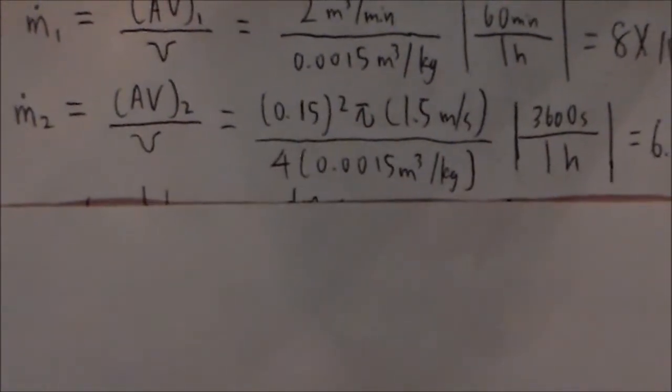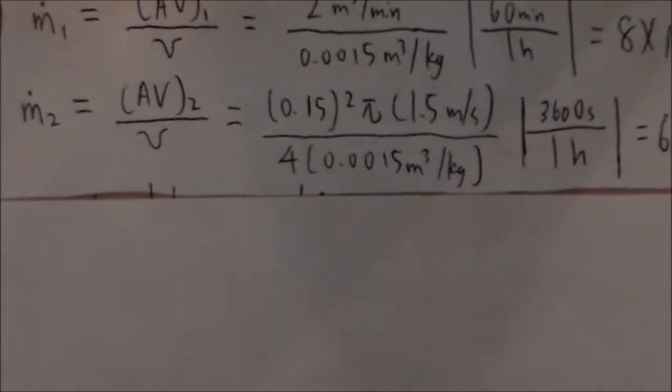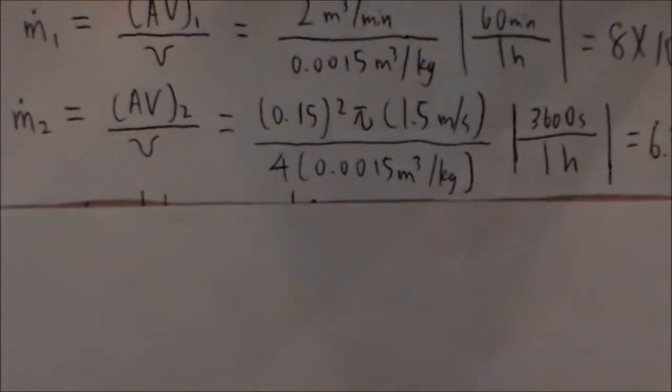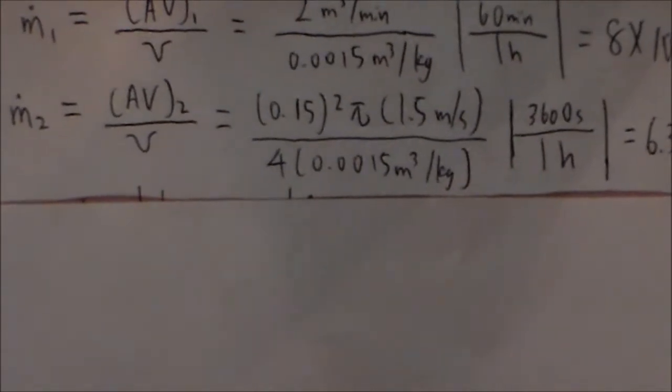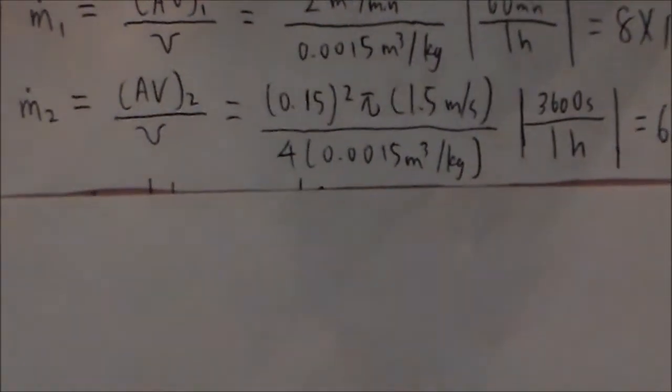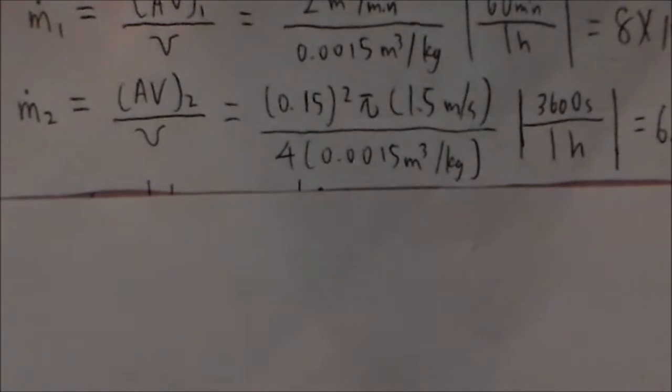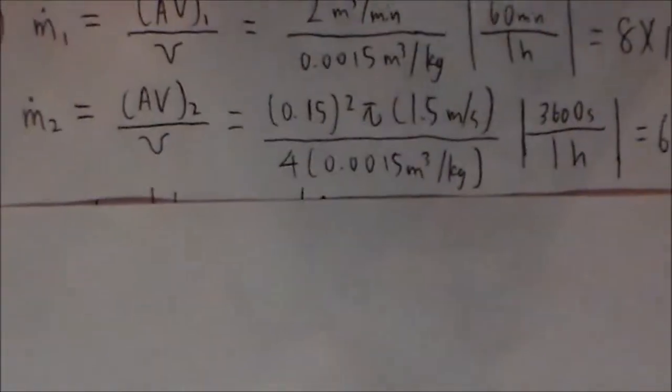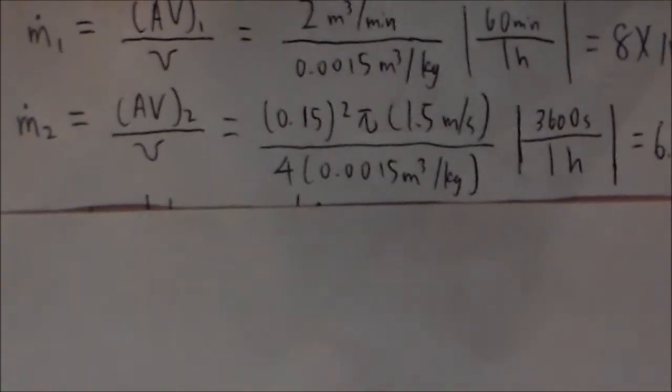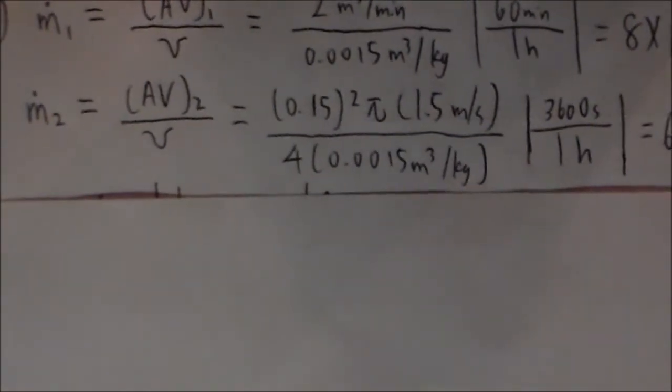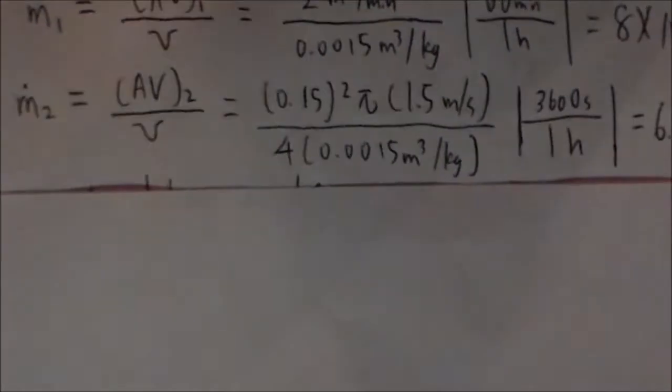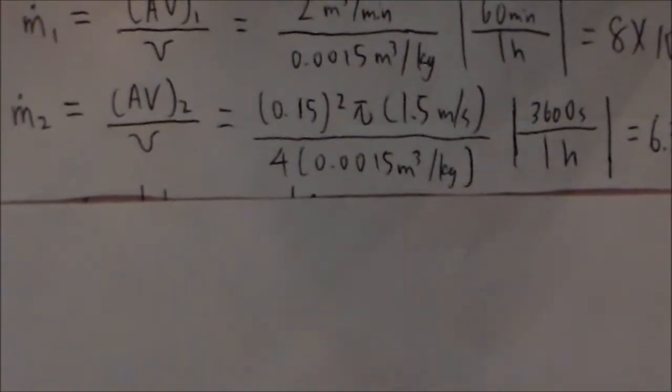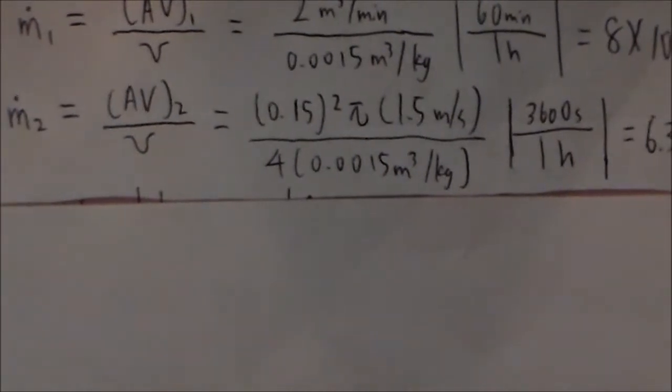The mass flow rate that is exiting is the volumetric flow rate divided by the specific volume. The exit diameter is 0.15 meters, and it's a circle. So the area would be the diameter squared times pi divided by 4. After performing the calculations and unit conversions, you would get that the mass flow rate is equal to 6.36 times 10 to the 4 kilograms per hour.